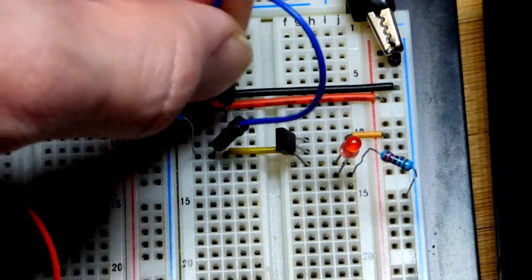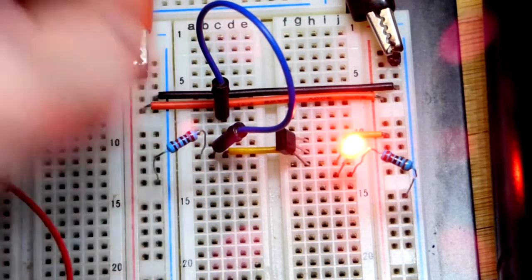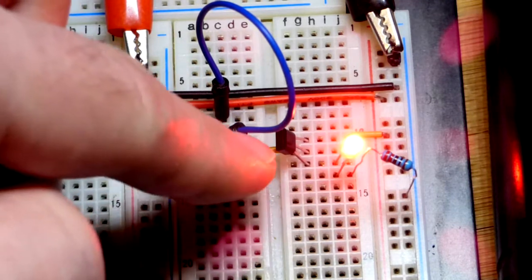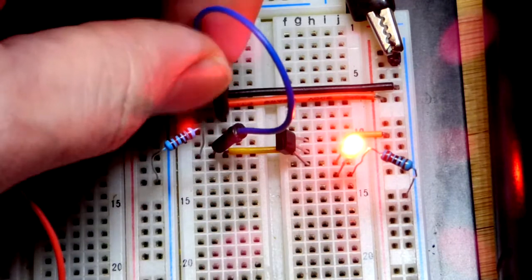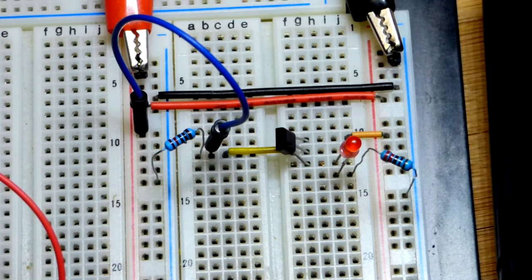Now if we want to make sure it stays on until we turn it off, we can put a pull-down resistor. It's pulling down the gate voltage, making sure it stays on until we overpower it with a direct connection to the positive supply.